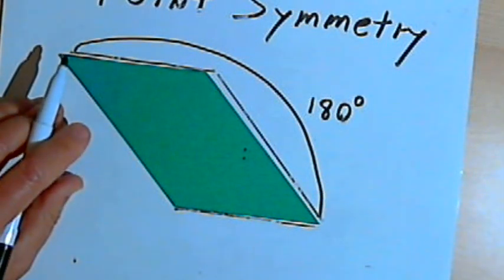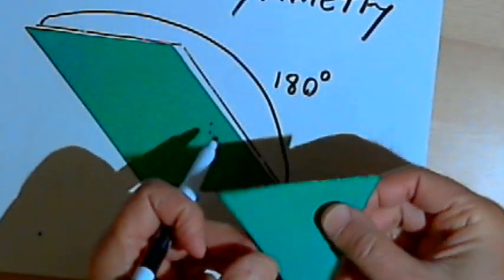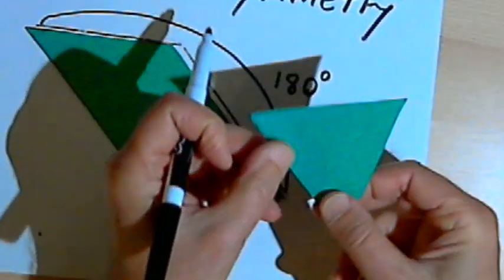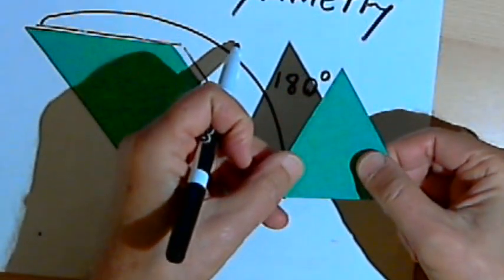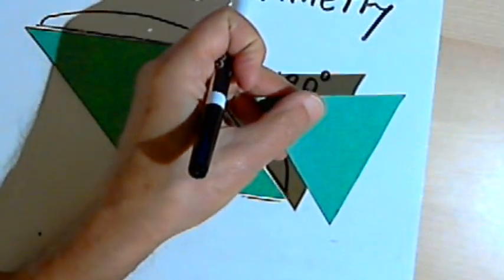A triangle would not have point symmetry because if I rotate it 180 degrees, it's not going to match up with its original. Let me do that again. I'm going to rotate it 180 degrees and it doesn't match up.